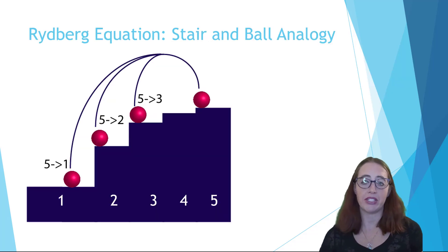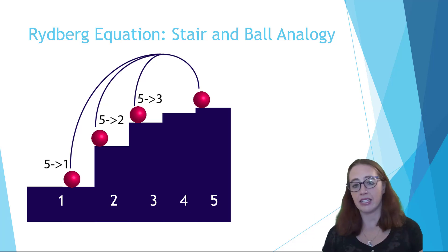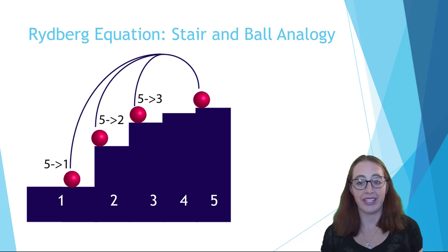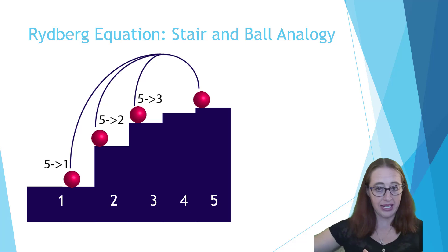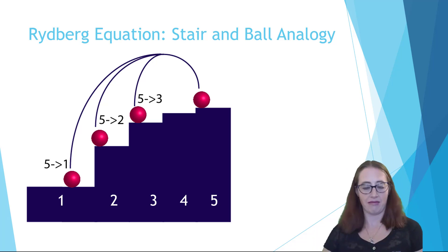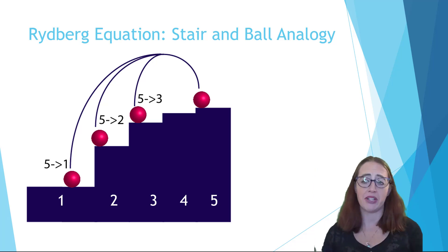Now let's move on to the Rydberg equation. I want to introduce an analogy first: we can think of energy levels as steps. A ball can transition from one step to another and can skip steps, but it always needs to be on a step—it can't rest in between. It's not a perfect analogy, as the ball travels between steps whereas an electron doesn't; it just goes from one to the other without ever traveling in between. But this idea helps us understand the math and logic when we get to spectroscopy.